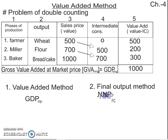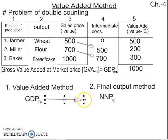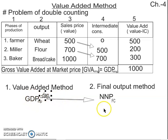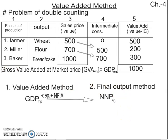To go from GDP at market price to NNP at factor cost: to go from gross to net, we minus depreciation. To go from domestic to national, we add NFIA. To go from market price to factor cost, we minus NIT — net indirect taxes. This gives us NNP at factor cost, which is our national income.